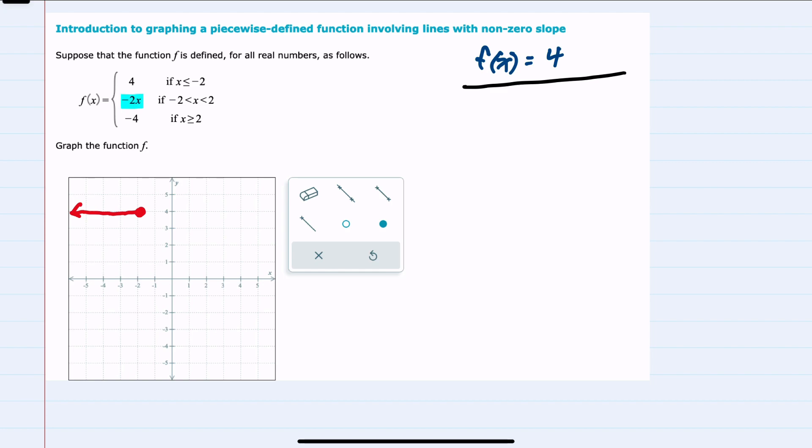And then for the next piece, we have f of x is equal to negative 2x. And in this form, I can see that the y-intercept is 0. So I'll put a dot here. And then the slope is negative 2.